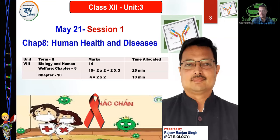Session one today: we'll talk about Human Health and Disease. This is one chapter from Unit 8 — or Unit 3 if you count Class 12 units. Unit 8 contains 14 marks total, which is around 40% of the weightage — a very good opportunity. Chapter 8, Human Health and Disease, generally carries 10 marks, which may vary by one or two marks.